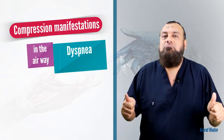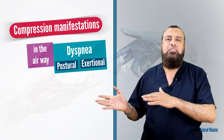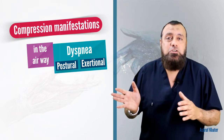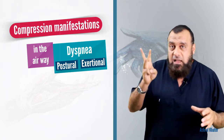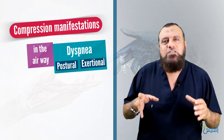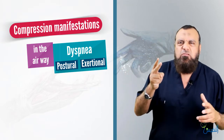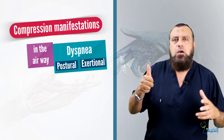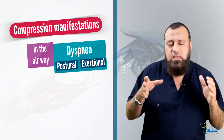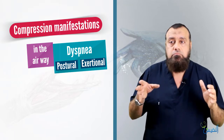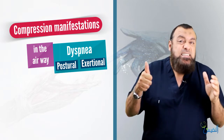There are two types of dyspnea in thyroid disorders. Number one is postural dyspnea, related to compression — the patient cannot lie down and usually sits in a semi-sitting position. Number two is exertional dyspnea, which is related to the hyperdynamic state associated with toxic goiter. Postural dyspnea goes with compression; exertional dyspnea with toxic goiter.